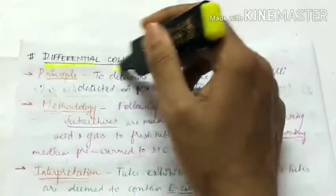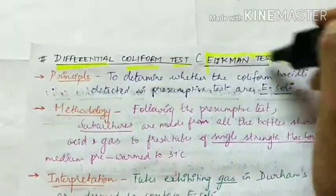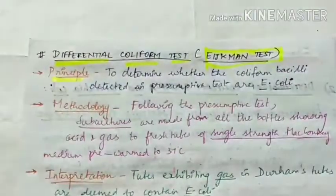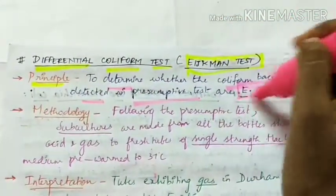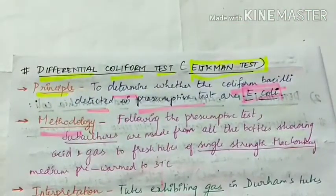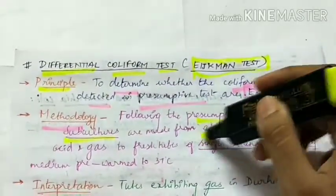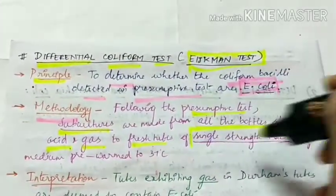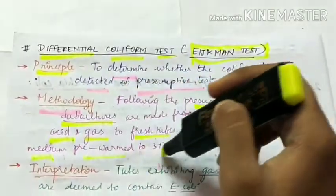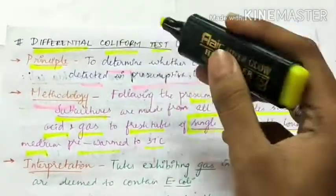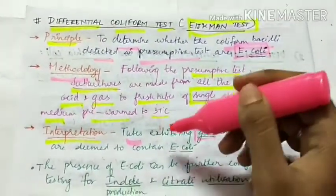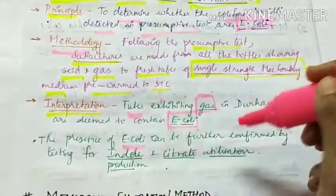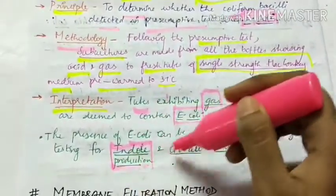The next method is the differential coliform test, called the Eijkman test. The principle is to determine whether coliform bacilli detected in the presumptive test are E. coli or not. Subcultures are made from all bottles showing acid and gas to fresh tubes of single-strength MacConkey medium pre-warmed to 37°C. Tubes exhibiting gas in the Durham tube are deemed to contain E. coli, confirmed further by testing for indole production and citrate utilization.